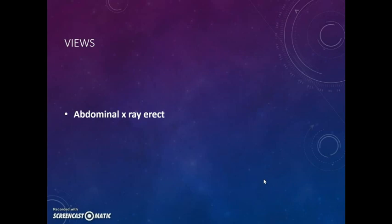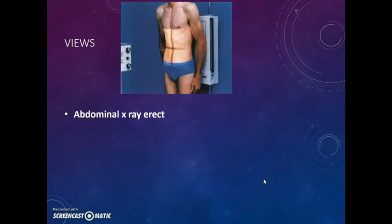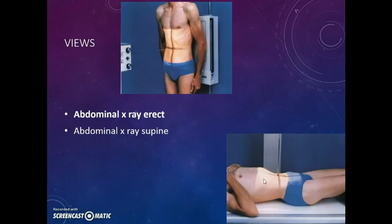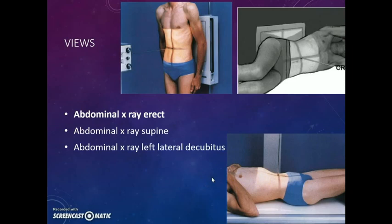The abdominal X-ray erect view is the most common view we take because we get important findings. In the supine view, rather than making a diagnosis, it adds on to the findings seen in the erect view and gives more information. Sometimes the patient may be unable to stay erect, especially debilitated people. In that case, the left lateral decubitus view gives some of the information that the erect view provides. We will discuss each one of these views in detail.